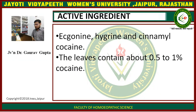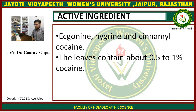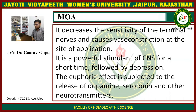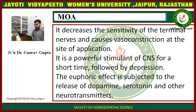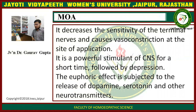Its active ingredients are Ecgonine, Hygrine, and Cinnamoyl cocaine. The leaves contain about 0.5–1% of cocaine. It decreases the sensitivity of terminal nerves and causes vasoconstriction at the site of application. It is a powerful stimulant of the CNS for a short time, followed by depression. The euphoric effect is due to the release of dopamine, serotonin, and other neurotransmitters.